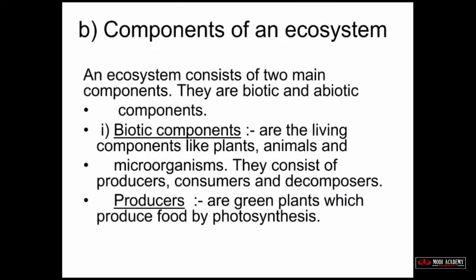An ecosystem consists of two main components: biotic and abiotic components. Biotic components are the living components, like plants, animals, and microorganisms. They consist of producers, consumers, and decomposers.